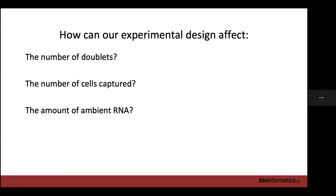To think about experimental design: doublets depend on the ratio between flow rate and cell concentration — higher cell concentration means more doublets. To change cells captured, you can adjust cell concentration or the number of droplets generated. For ambient RNA, you can improve dissociation protocol, do a viability count, or flow-sort cells to remove debris before loading. Doublets from the 10x Chromium technology: most people aim for 4,000–5,000 cells per run, getting about 3–4% doublets. 10x has just released a press release claiming a new version with 20x fewer doublets and twice as many cells captured.